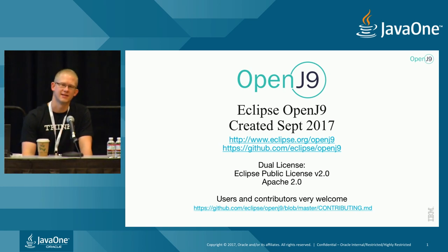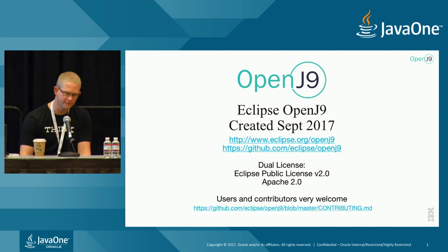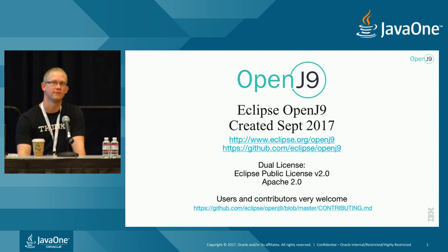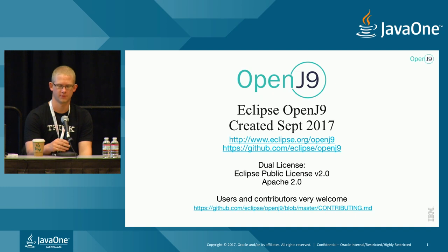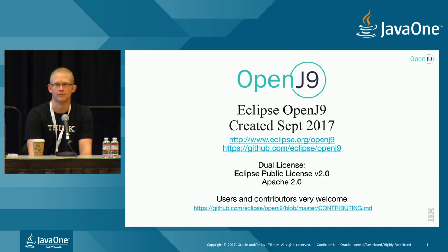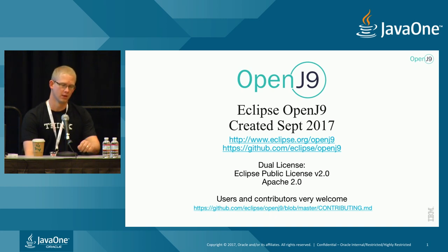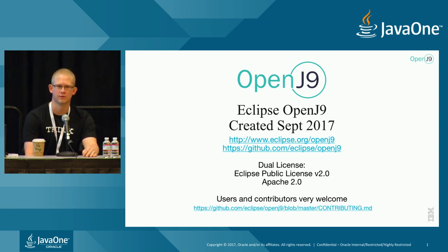And I'm Dan Heidinga. I also work for John and for Steve. I've been involved in virtual machine development for 10 years at IBM. All of that time involved with the J9 virtual machine codebase. And I've been involved with JSR 292 and 335 in both the implementation and the expert group.